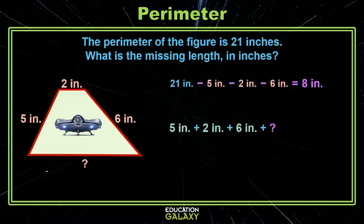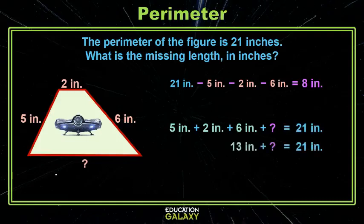Remember that you can add all of the side lengths to find the perimeter. But in this case, we're missing one of those side lengths. But we do know the perimeter. So now we can add up what we do know, which is 5 and 2 and 6. That will give us 13. Now we just need to know how to get from 13 to 21, which is 8.